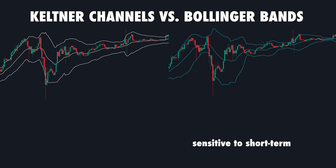As a result, Bollinger Bands tend to be more sensitive to short-term fluctuations. On the other hand, Keltner Channels offer a smoother, more stable view of price action, making them ideal for identifying longer-term trends.